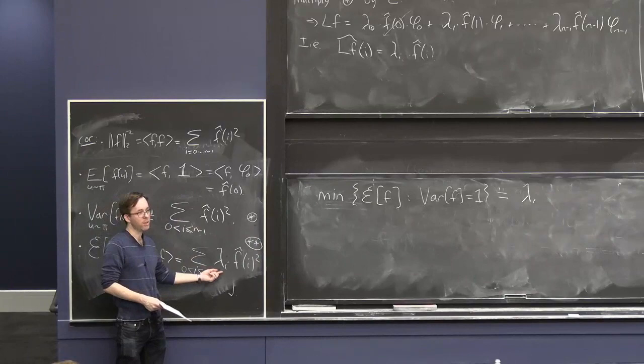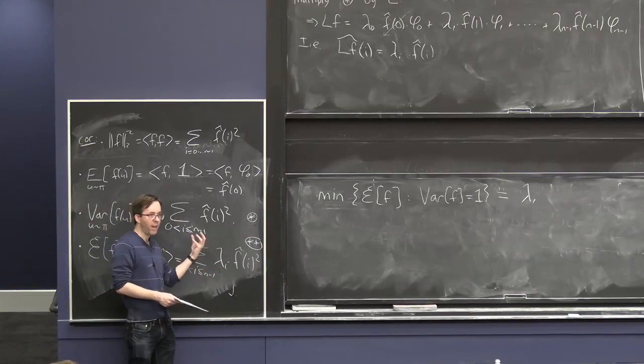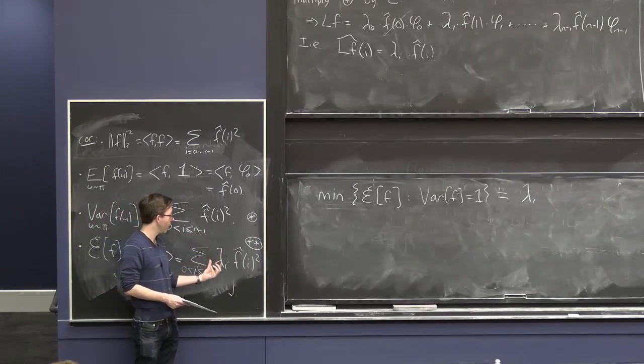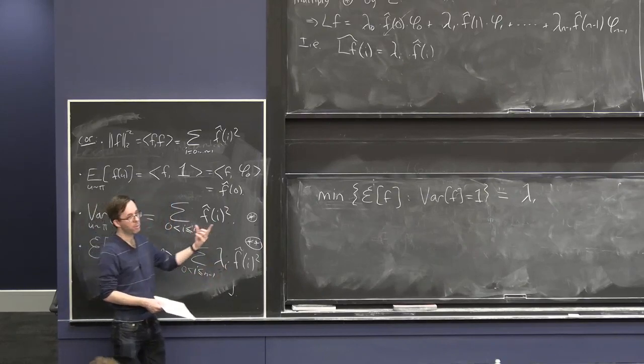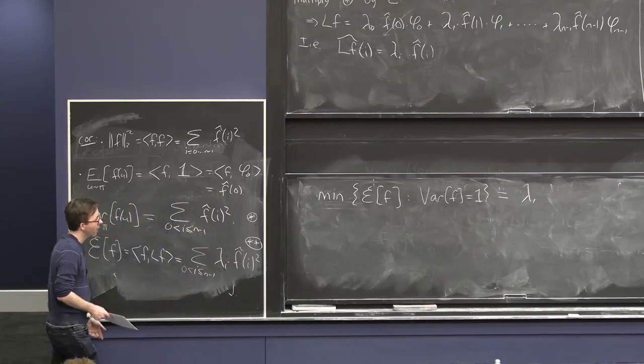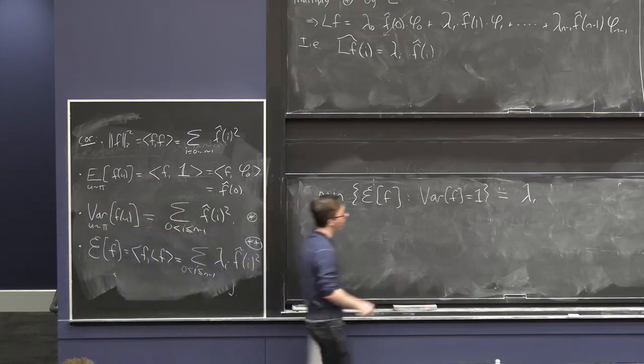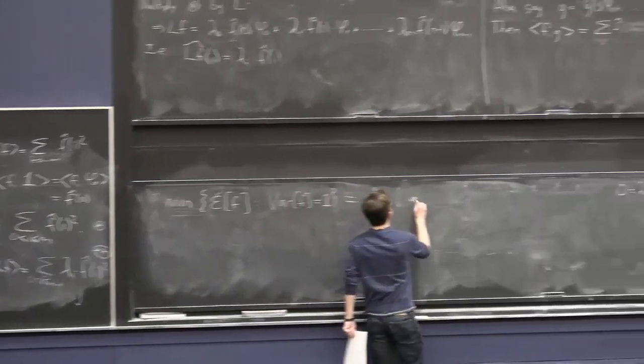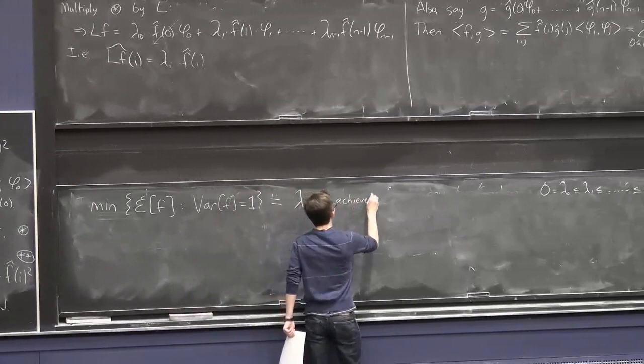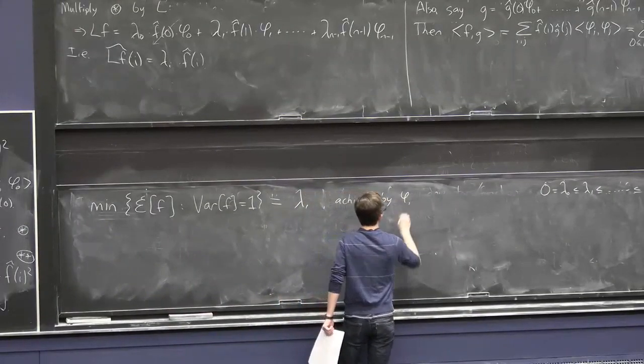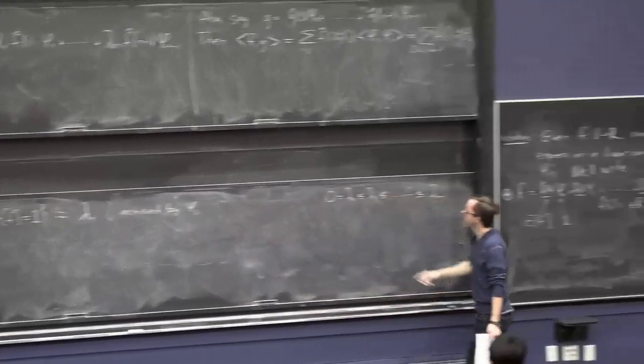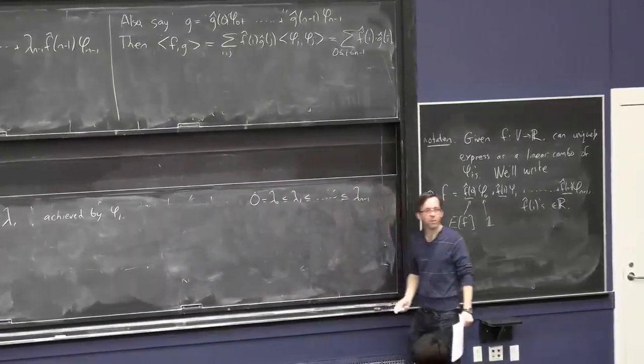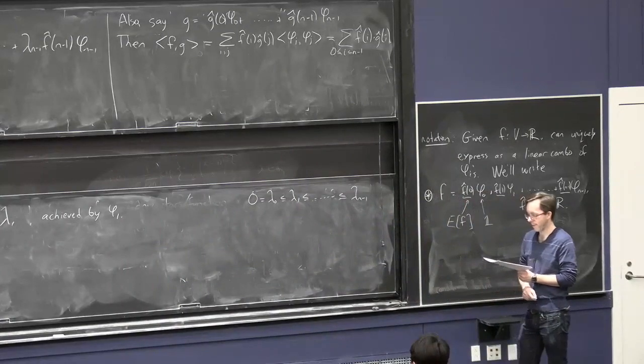Well, I should just put all my f hat i squaredage on whichever is the smallest lambda, which is lambda 1. So, this is lambda 1, and it's achieved by phi 1. And it might possibly be achieved by phi 2 if lambda 1 happens to equal lambda 2, but that's the situation.